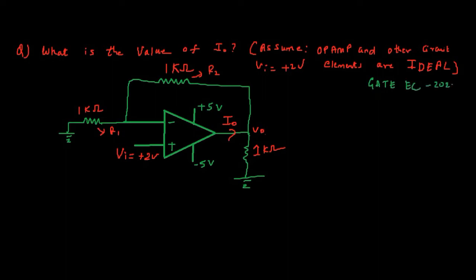The question is: what is the value of I0, which is the current at the output of an operational amplifier? Assume that the op-amp and other circuit elements are ideal. We have an input voltage of 2 volts, with R1 and R2 as 1 kilo ohm each, and also a resistance of 1 kilo ohm on the output side. We need to find out what is the value of I0.